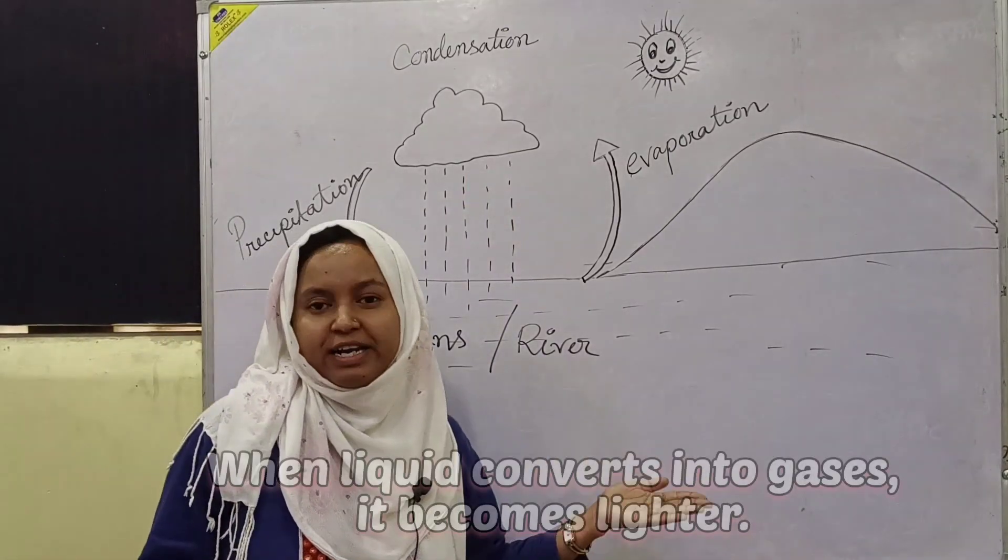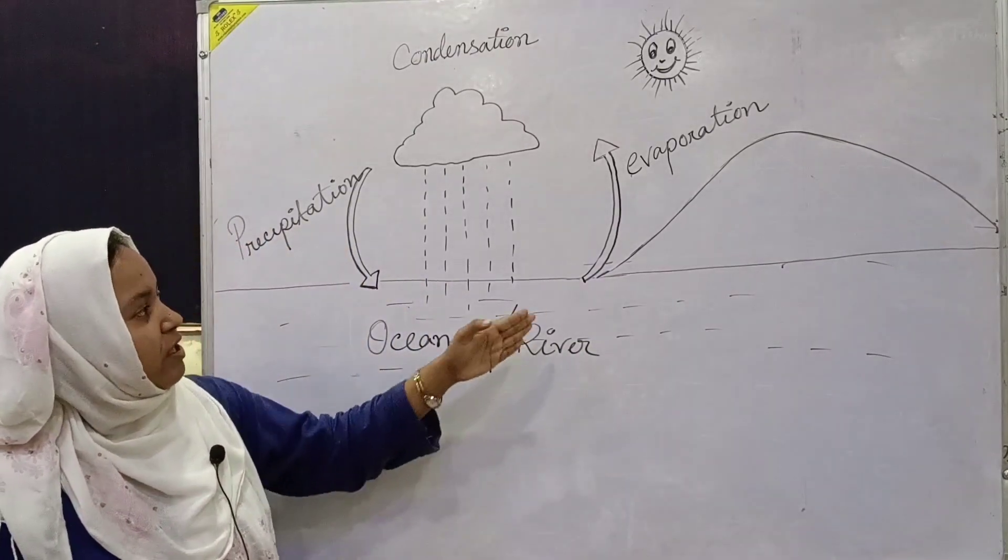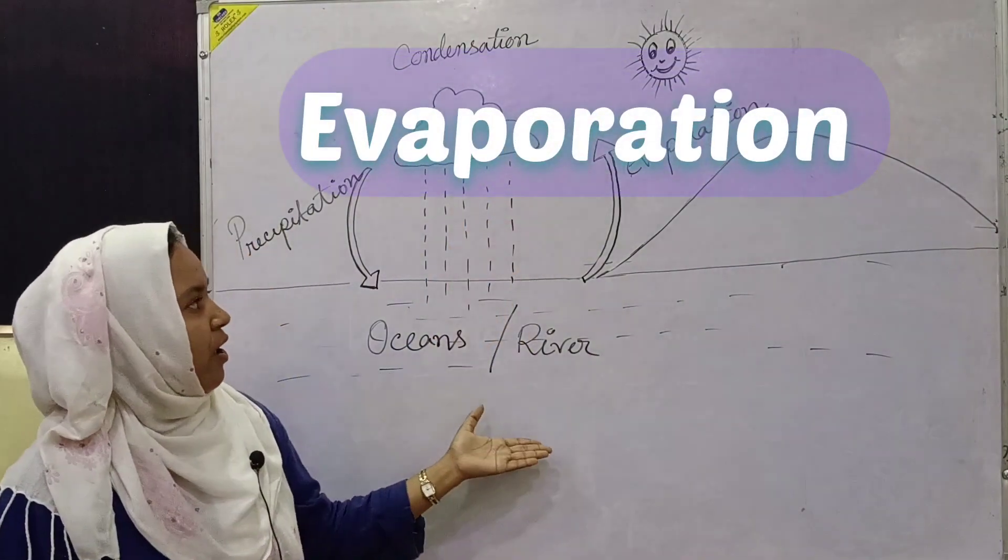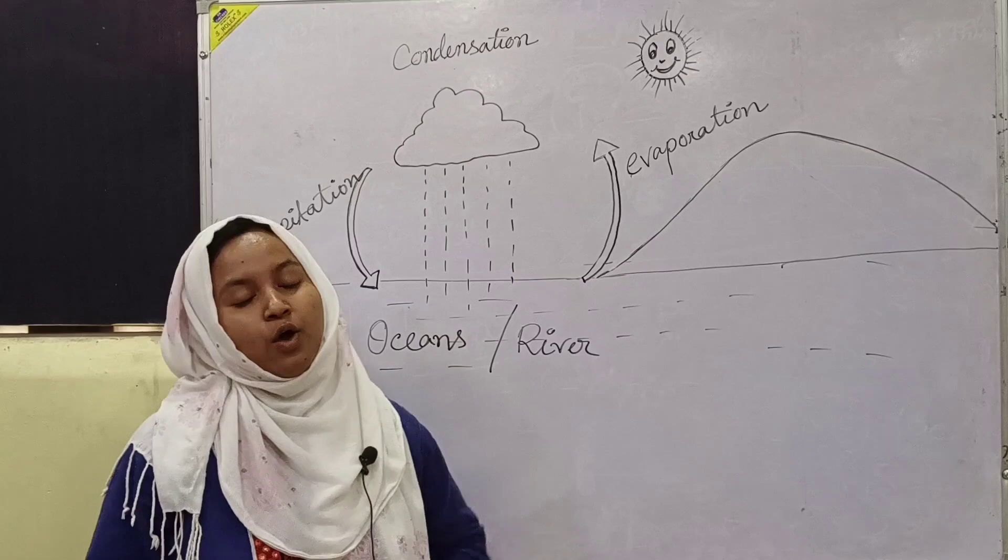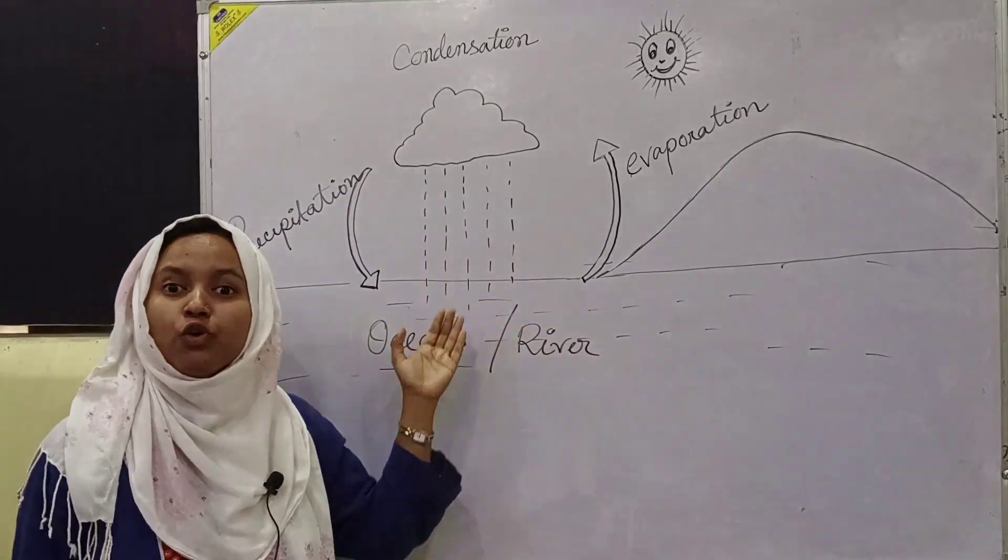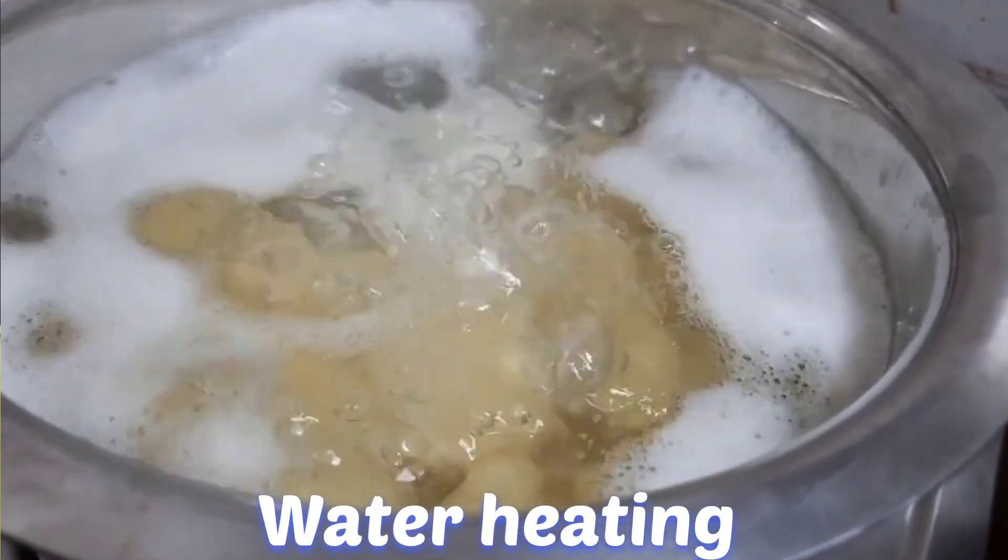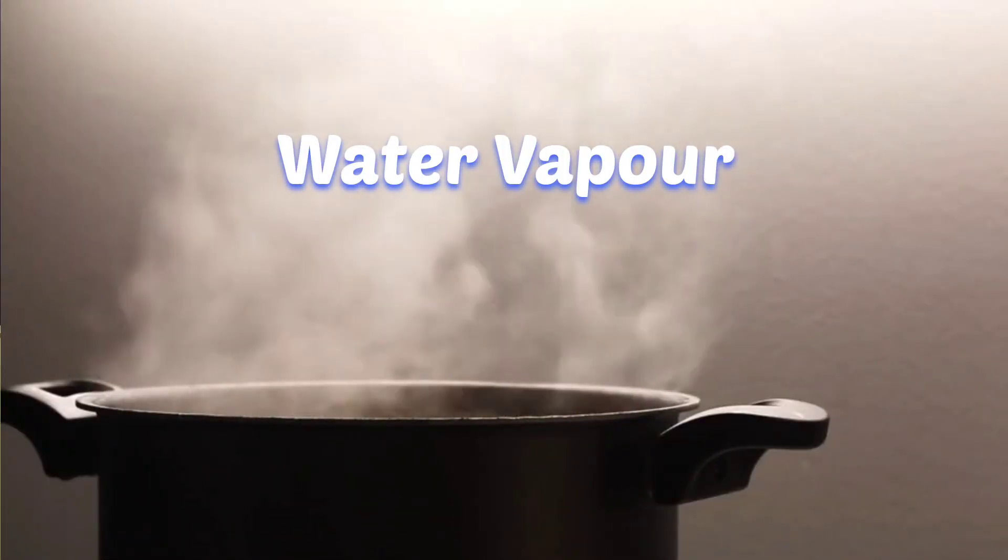So this process is known as evaporation. This is the first step of the water cycle. Well, you can see this process like water vapor in your home also. Just tell your mom to heat some water. After a few times, you will be able to see the water vapor. It goes up in the air.